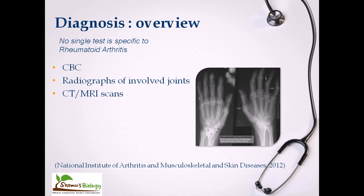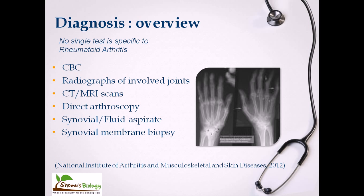We can use direct arthroscopy — a technique where we insert a probe with a camera, or take out certain tissue for tissue biopsy purposes. Synovial fluid can be taken from the joint and examined using chemical tests to find out whether there is any problem. Synovial membrane biopsy can also be done — we take a part of the synovial membrane to check if it is working properly, because problems with the synovial membrane are common in any kind of arthritis. Arthrocentesis is another process we will discuss later.